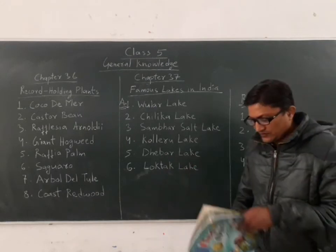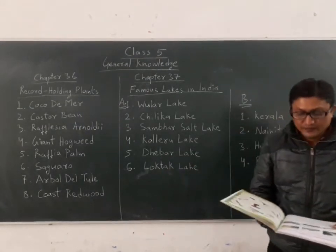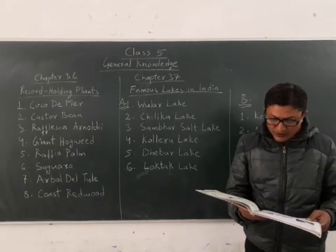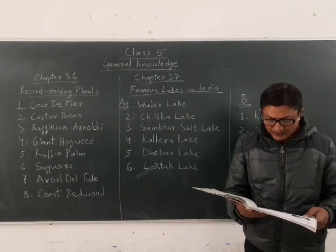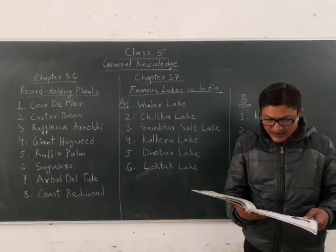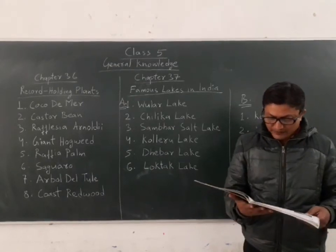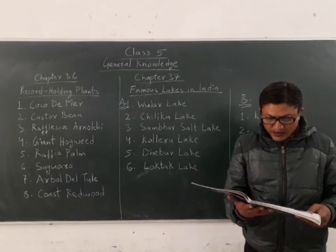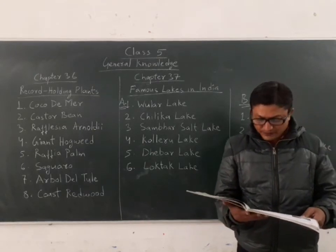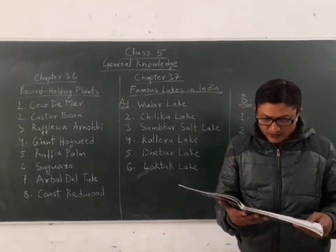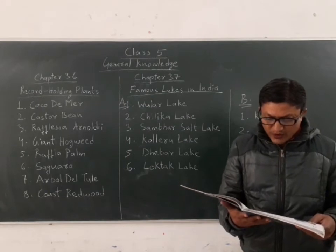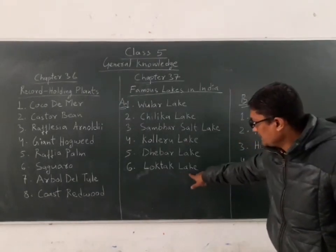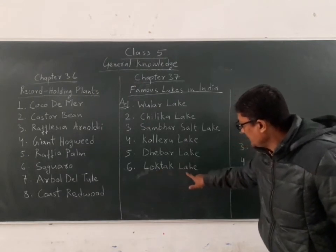Sixth: located 53 km from Imphal, it is the largest freshwater lake in Northeast India. It is known for its circular floating swamps, which are called Phumdis in the local language. The answer is Loktak Lake.